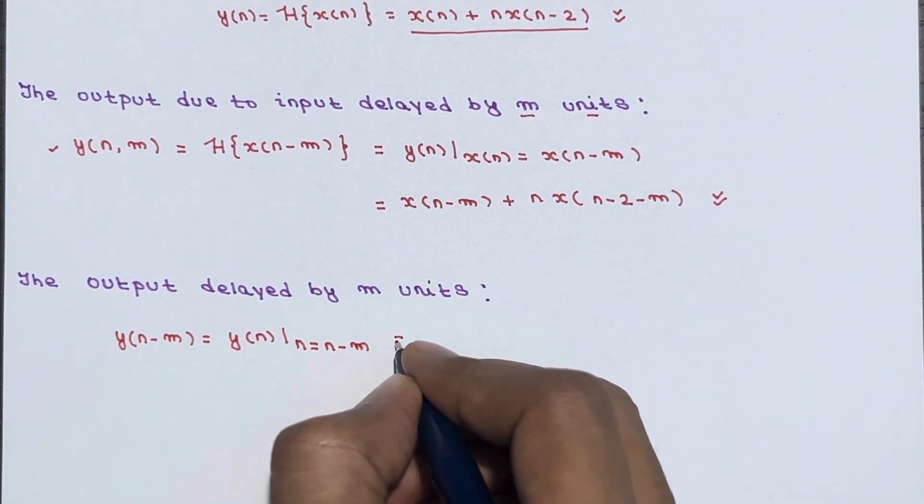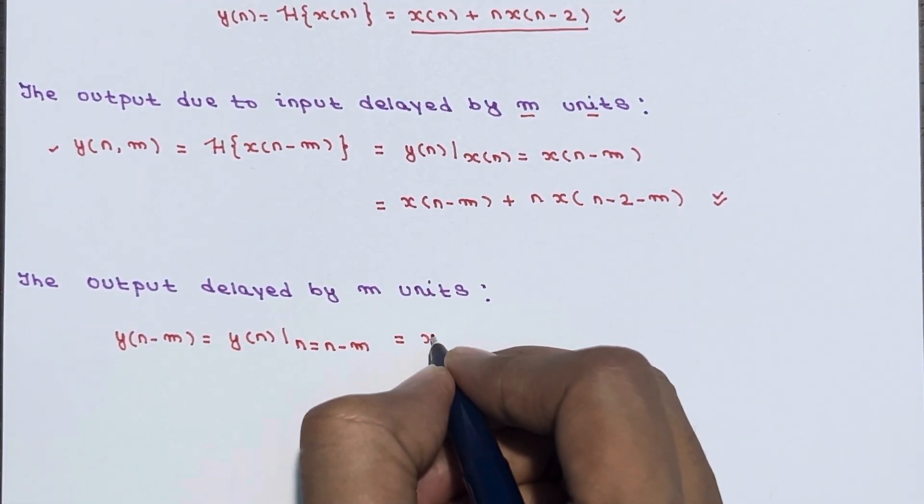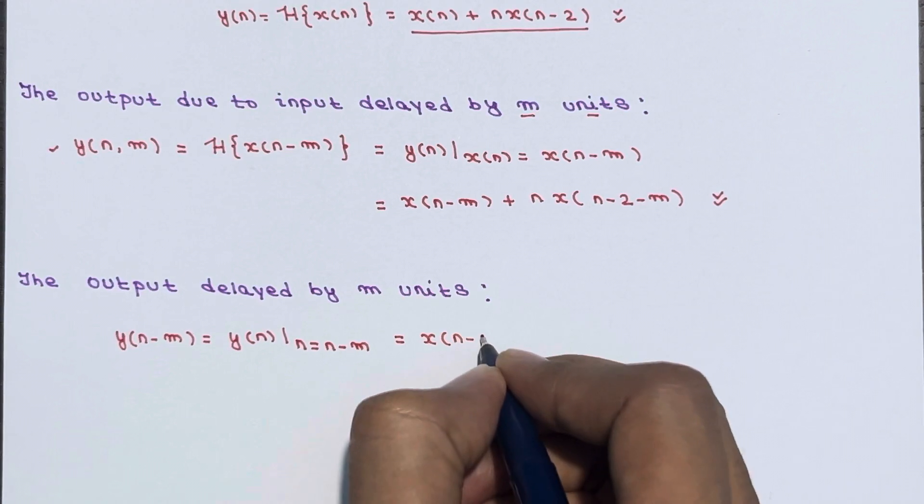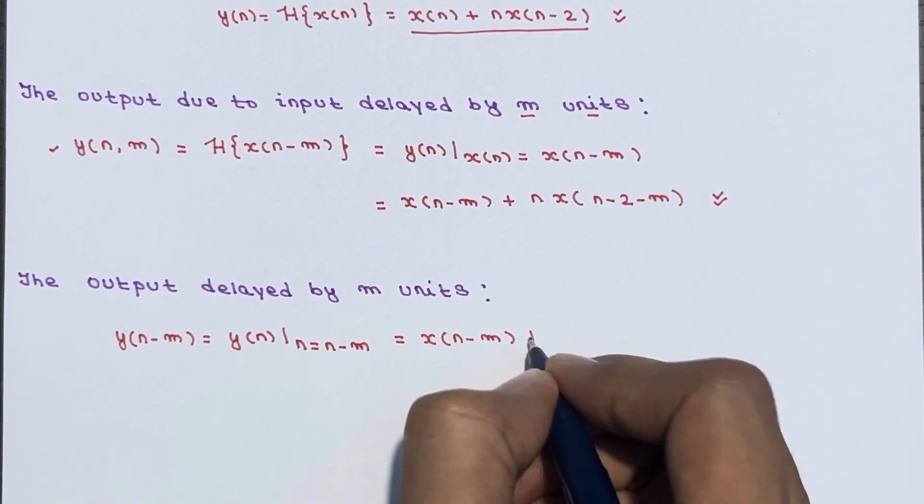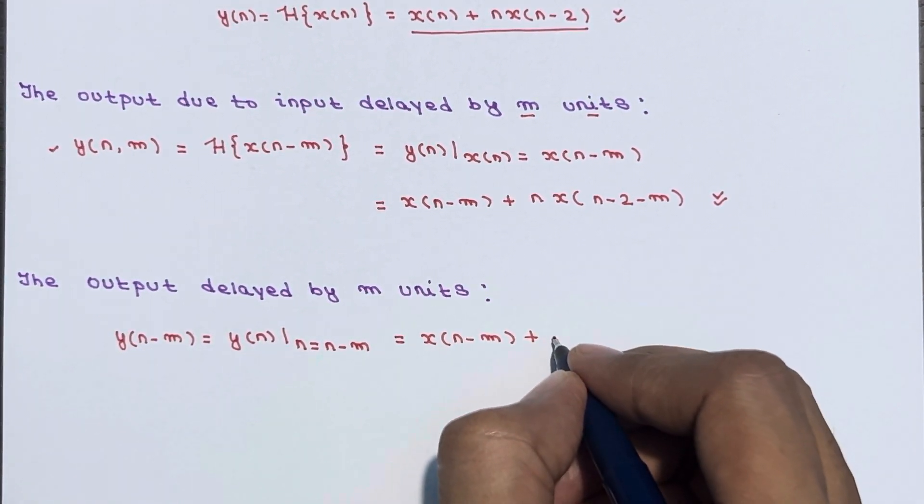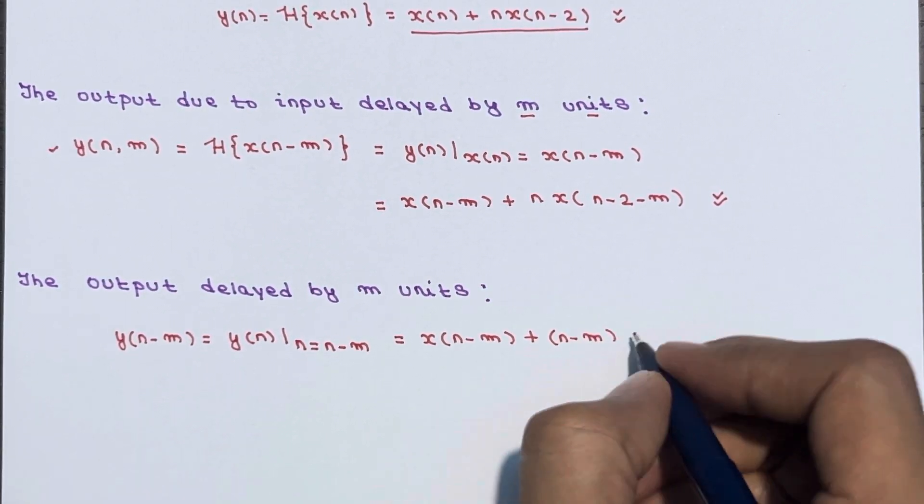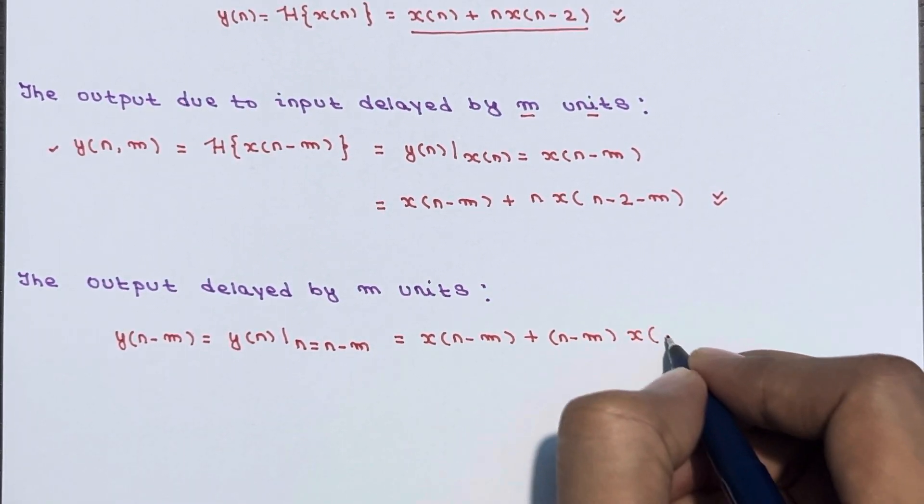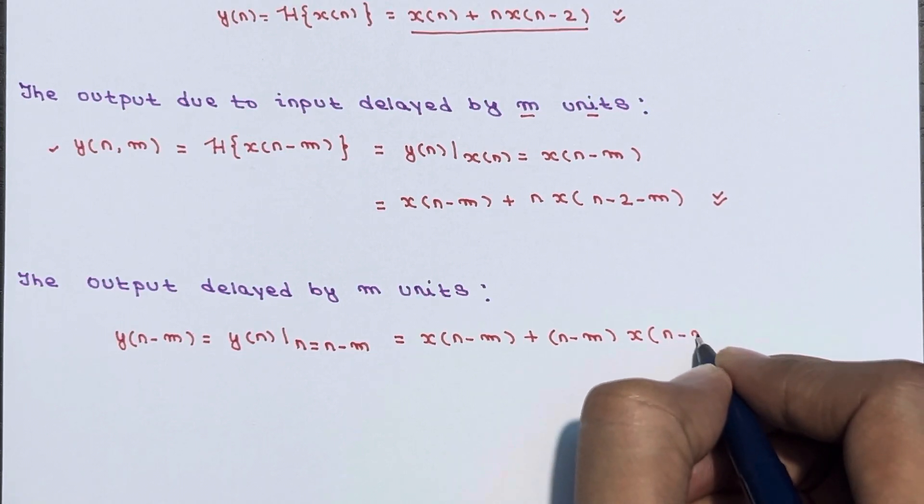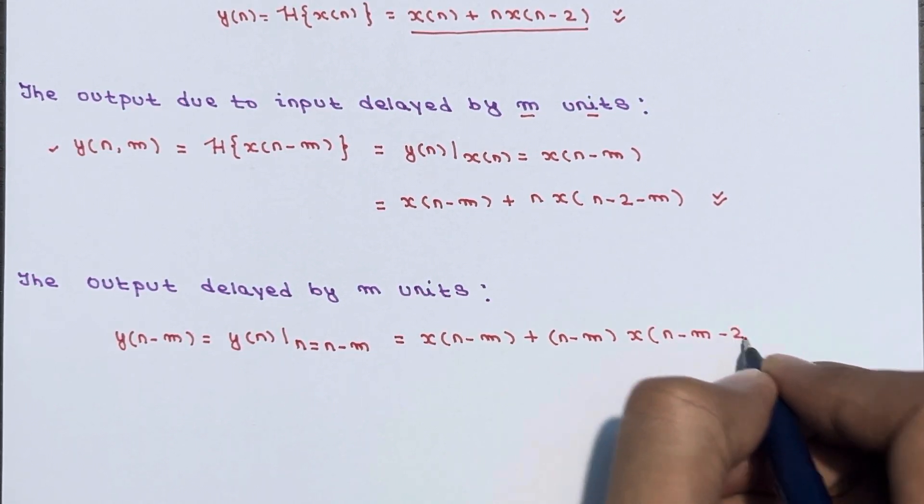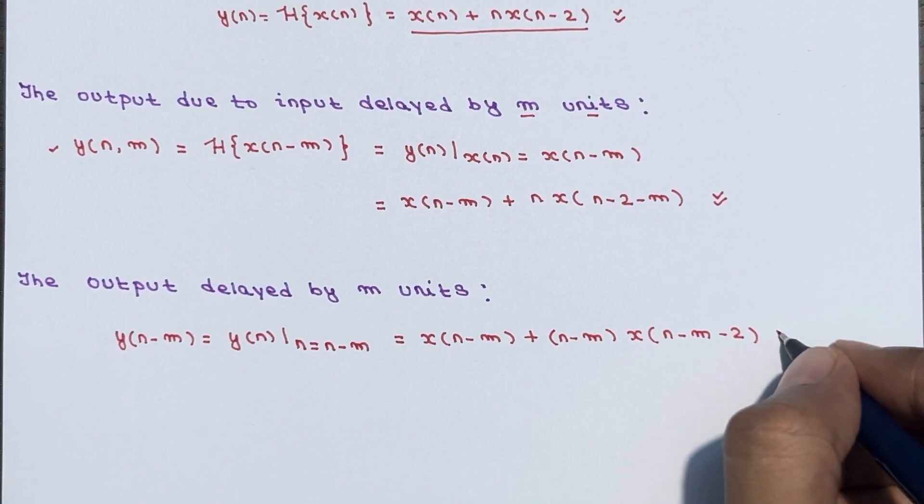So this will become x(n-m) + (n-m)*x(n-m-2). So hope it is clear to you.